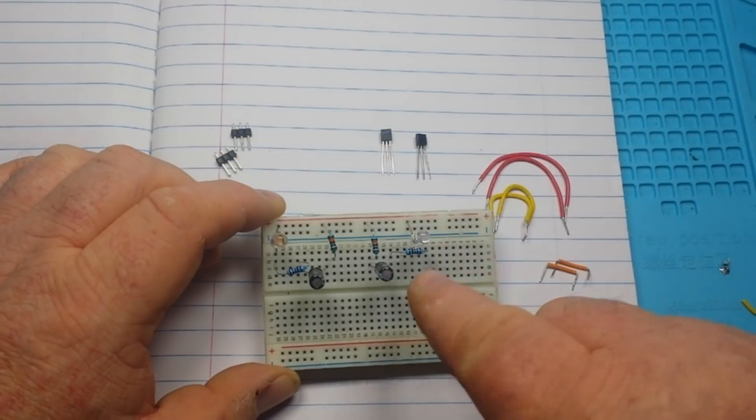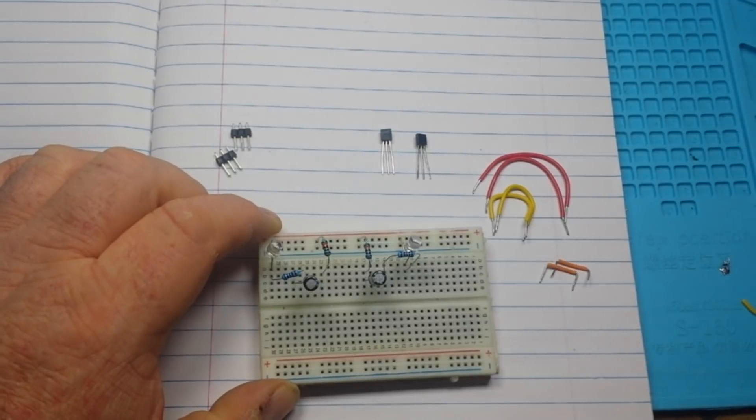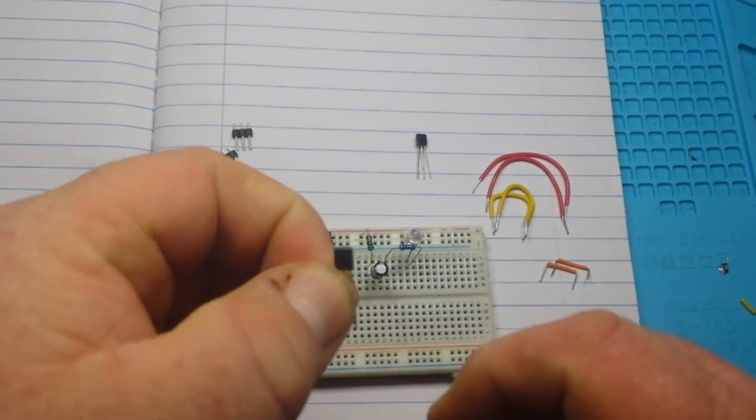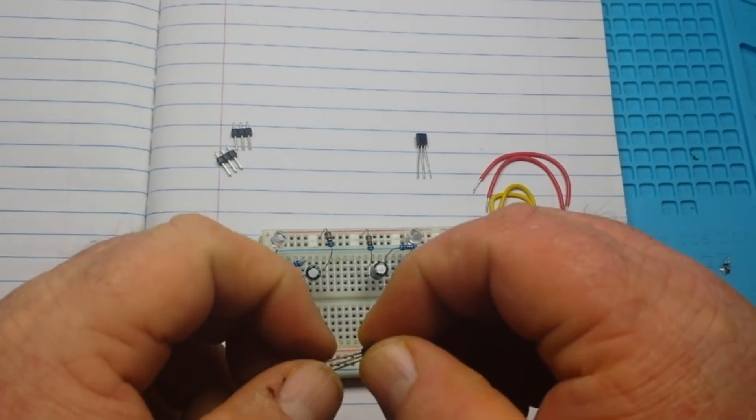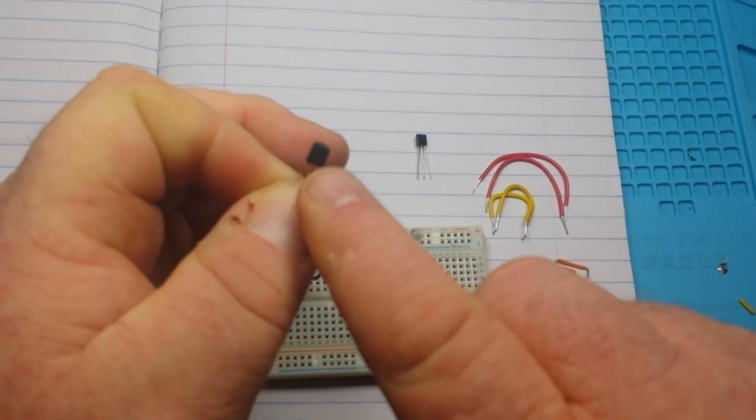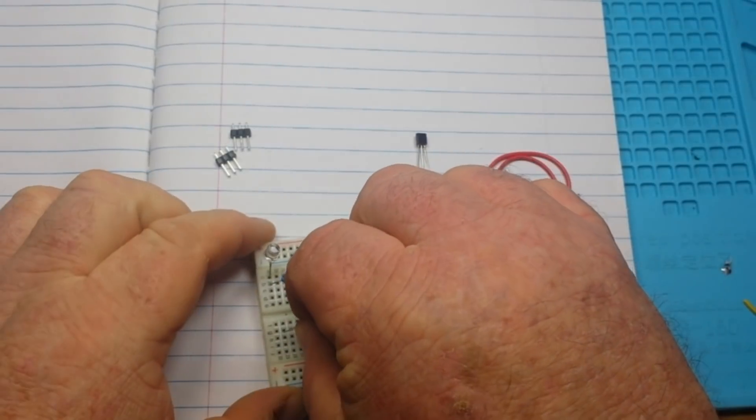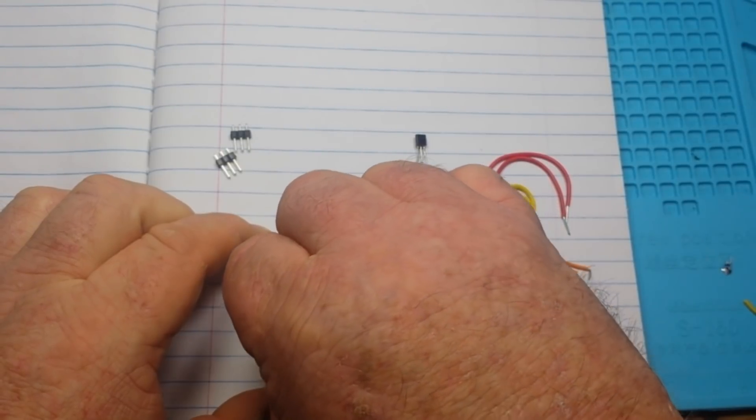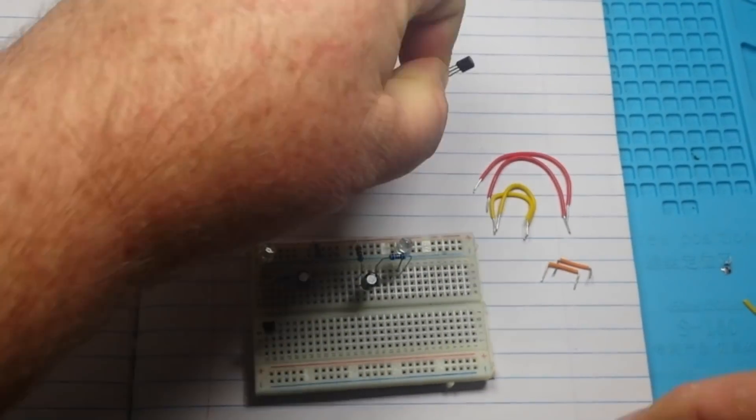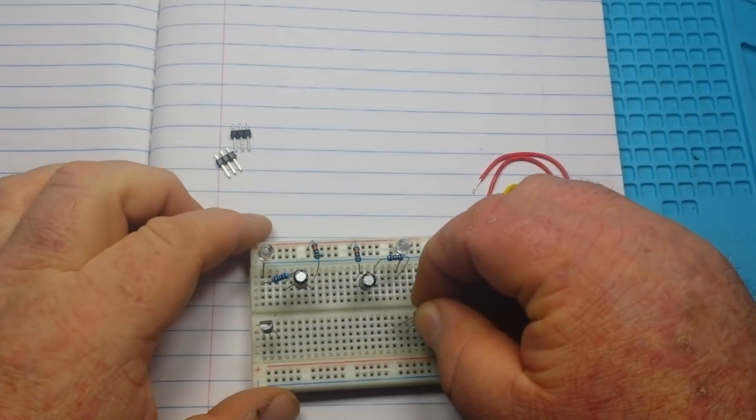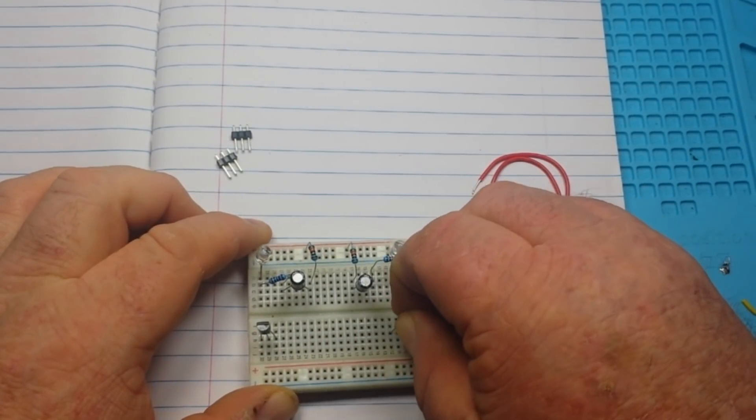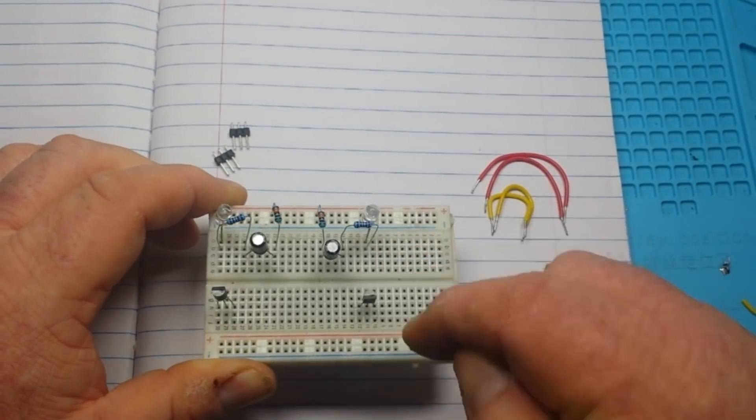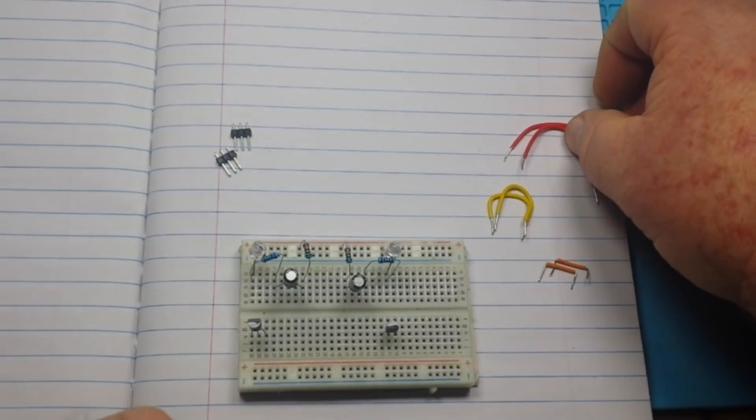Next we're going to take two NPN transistors, these are the S8050s. There's also S8550s in there, don't use them. On the left side take the flat part and face your other components, on the right side the flat faces towards you. You want to line them up so that the collector, which is the third pin, lines up with your LED row.